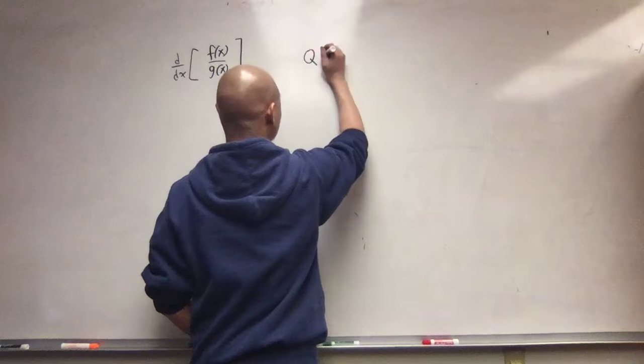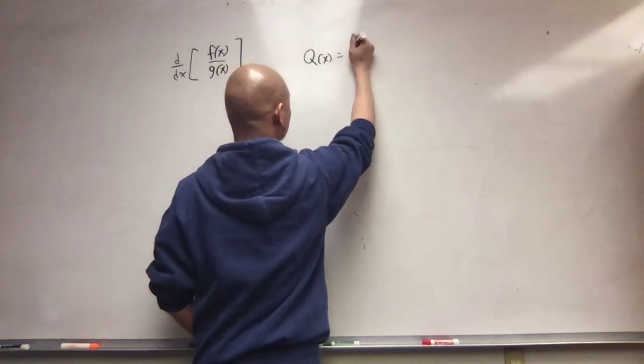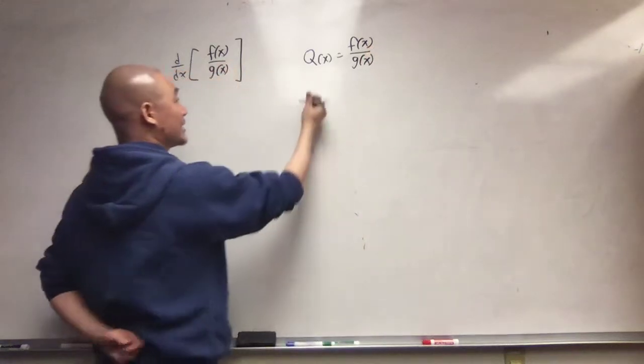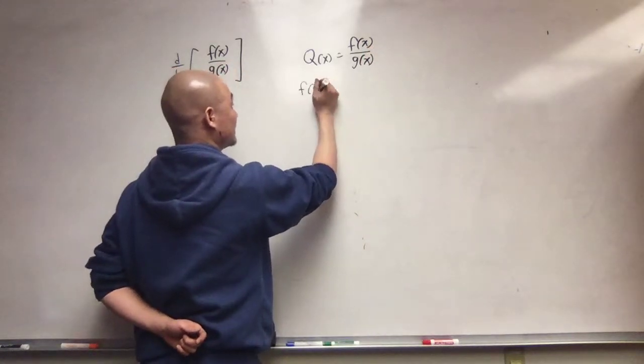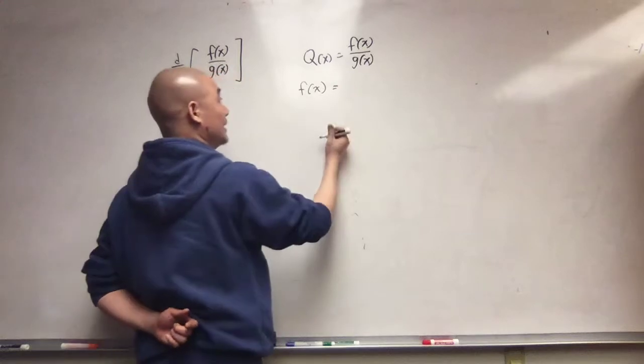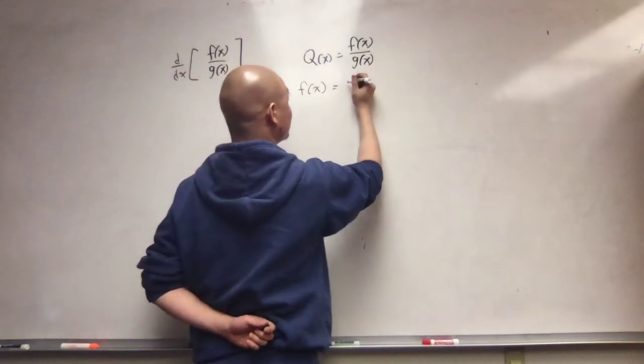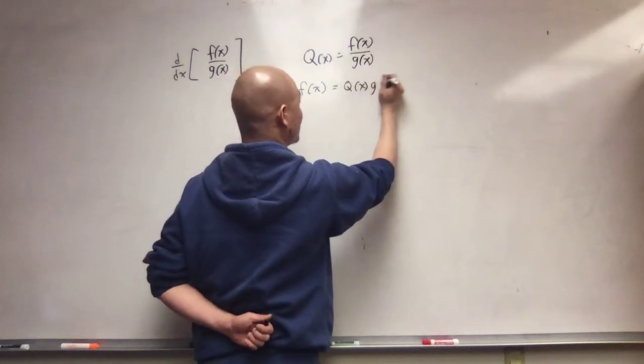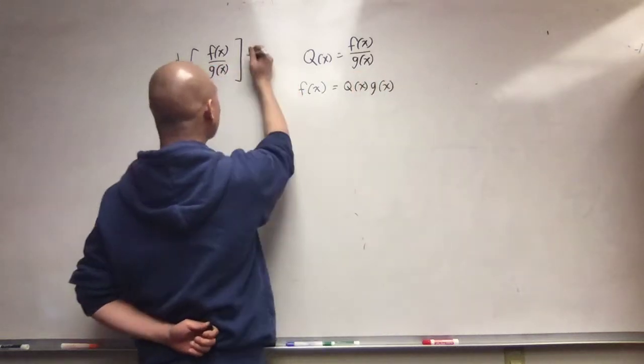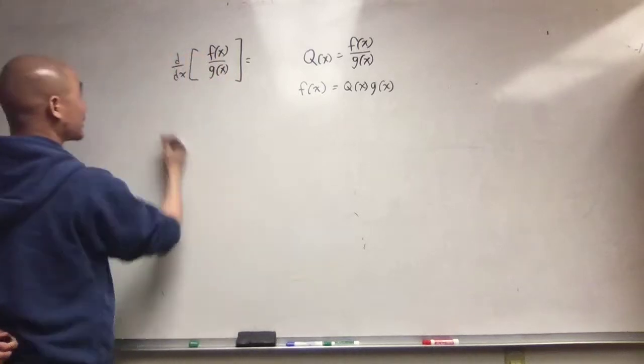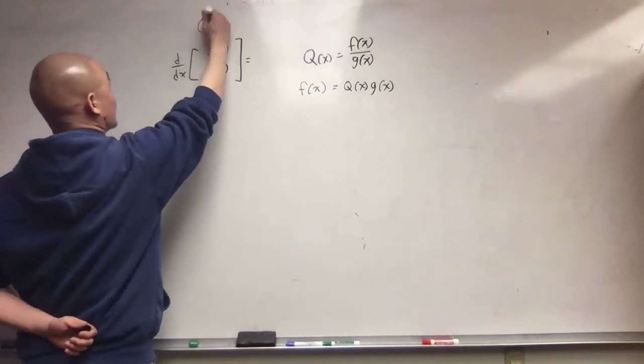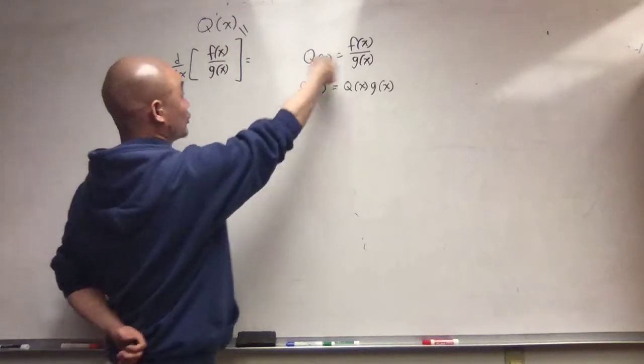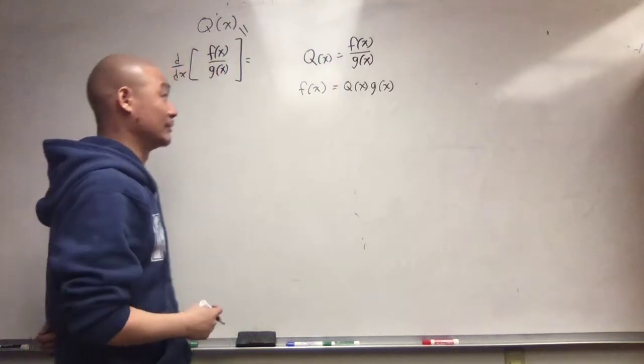I'm going to note that the quotient function is f over g. And what that means is f is equal to q times g. And remember, my goal here is to figure out what q prime of x is, right? Q is my quotient. I want to know what its derivative is.